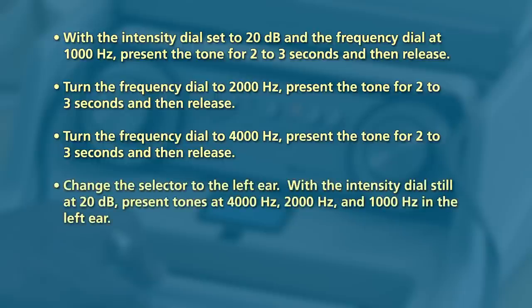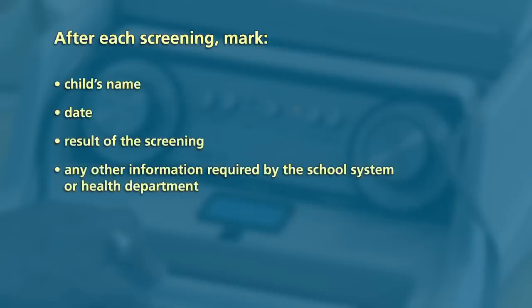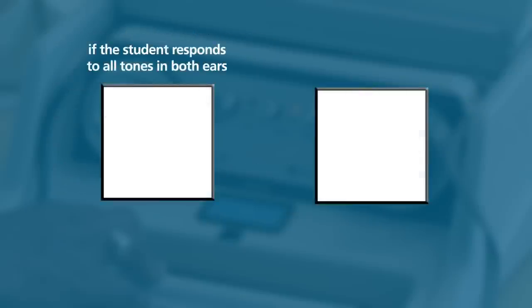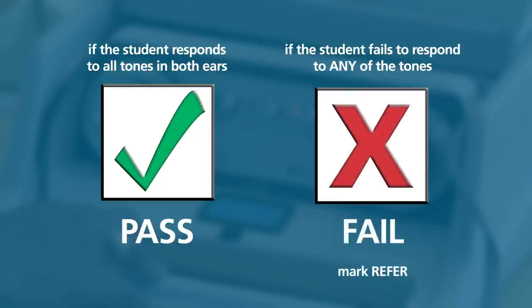Change the selector to the left ear. With the intensity dial still at 20 dB, present tones at 4,000 Hz, 2,000 Hz, and 1,000 Hz in the left ear. After each screening, the screener should mark the child's name, the date, the result of the screening, and any other information required by the school system and/or health department. If the student responds to all of the tones in both ears, they have passed the screening. If the student fails to respond to any of the tones — even if they miss only one tone — they have failed the screening. Mark 'refer' on the response form if they do not respond to all of the tones.